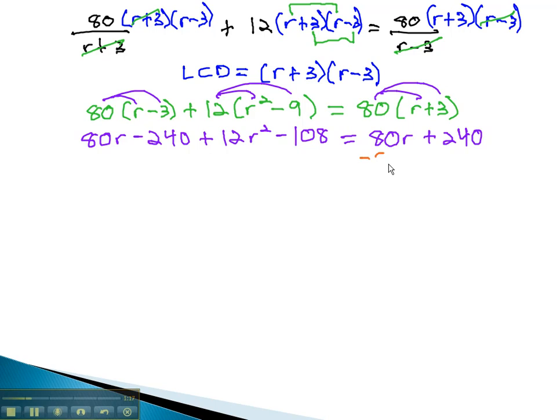You may notice we have 80r on both sides of the equation, so we can subtract it off of both sides to reduce the number of terms. And while we're at it, we will combine like terms on the left side. We now have 12r squared minus 348 equals 240.